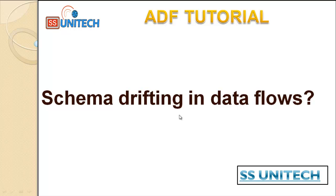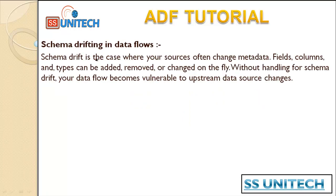Welcome to SS Unitech Sucili's site. This is a continuation of the Azure Data Factory tutorial. Today we are going to see about schema drifting in data flows. Schema drifting is the case where your source often changes metadata like fields, columns, or types that can be added, removed, or changed on the fly. Without handling schema drift, your data flow becomes vulnerable to upstream data source changes.